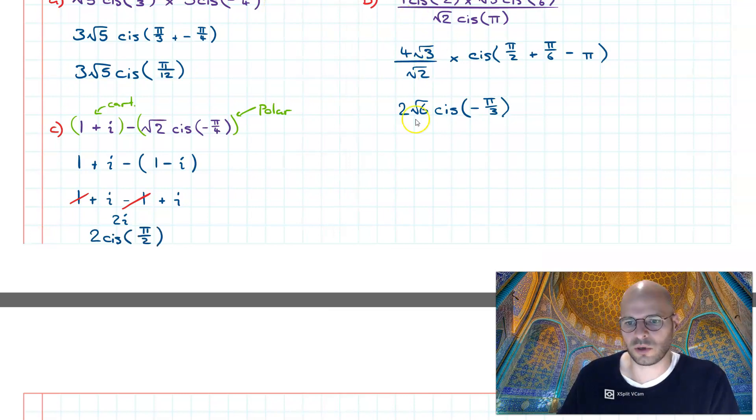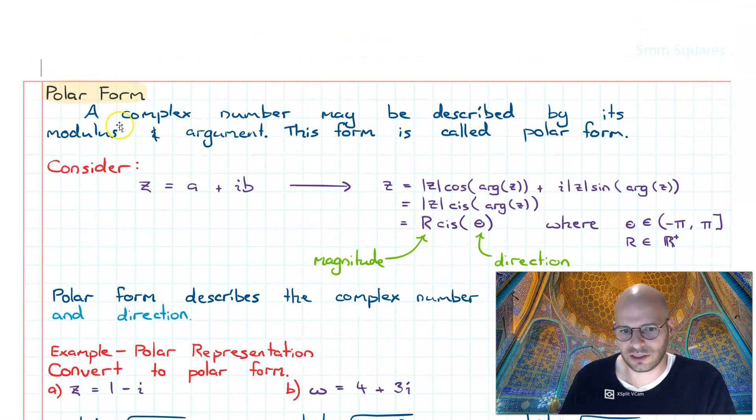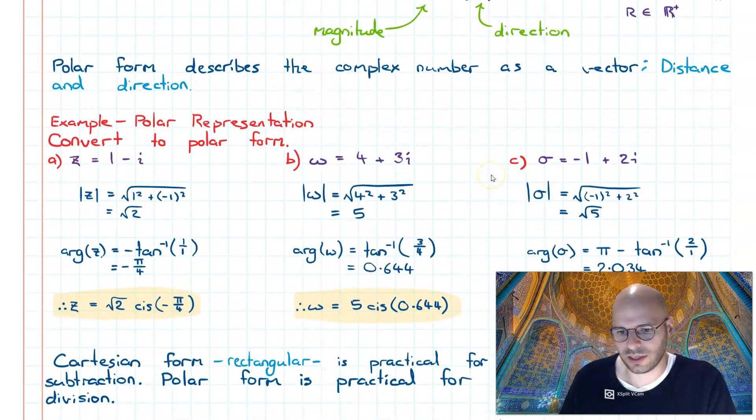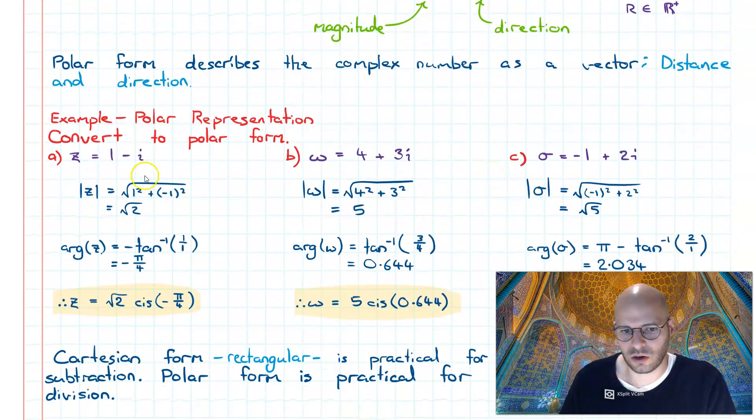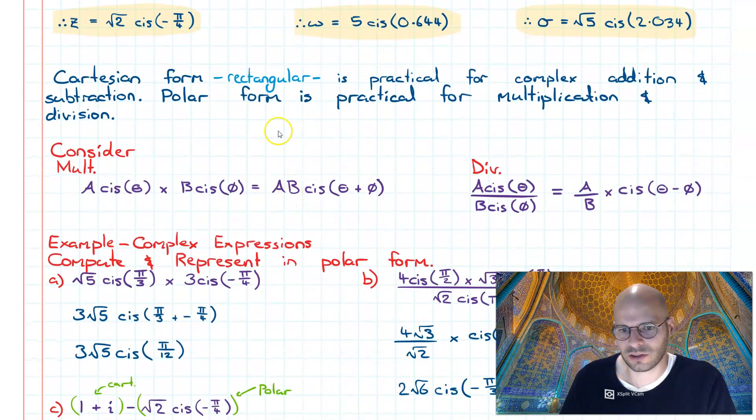So in summary, what we had a look at in this video was firstly the definition of polar form, that being R cis theta. Then we had a look at how we could do conversions from Cartesian form into polar form.